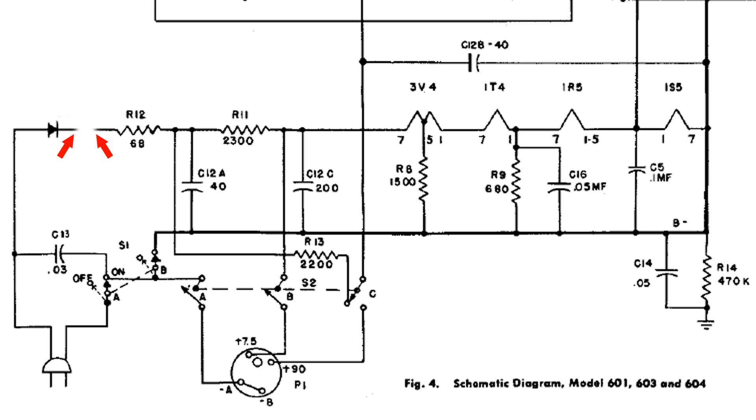And the reason for that is the selenium rectifier has a fairly high internal resistance. I think it's usually around 150 ohms, where the diode is just like a half an ohm, something like that.